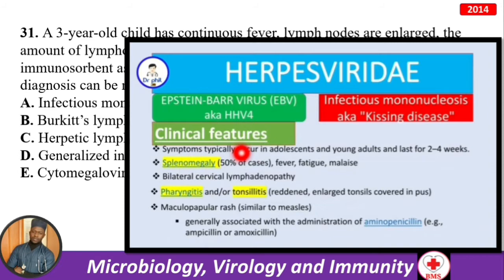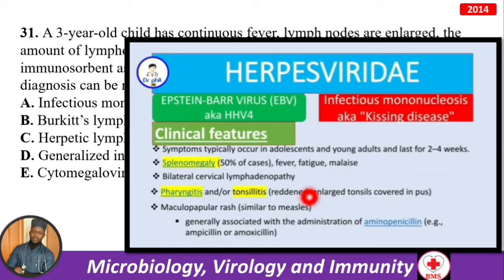Infectious mononucleosis symptoms typically appear in adolescents and young adults, lasting two to four weeks. You see splenomegaly in 50% of cases, fever, fatigue, malaise, bilateral cervical lymphadenopathy, pharyngitis, and tonsillitis with red enlarged tonsils covered in pus. There is also a maculopapular rash similar to measles, generally associated with administration of aminopenicillins like ampicillin or amoxicillin.